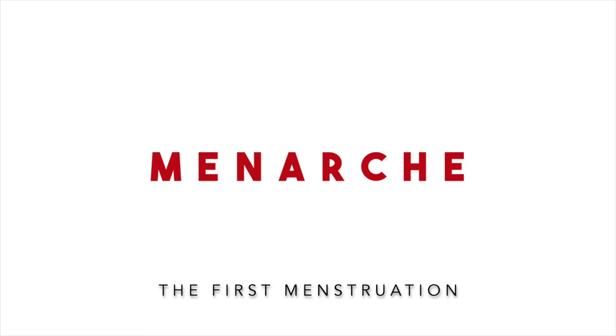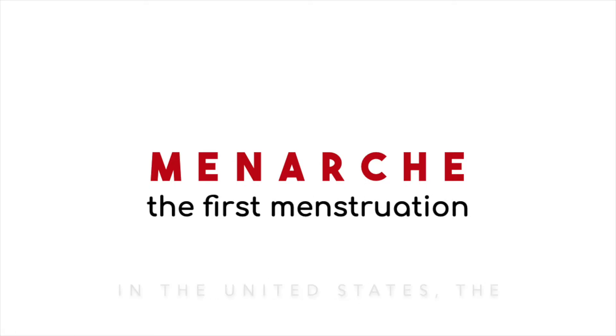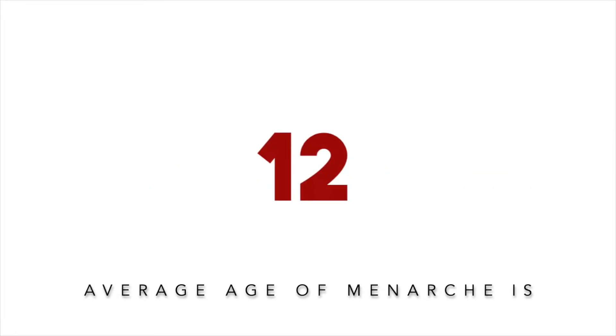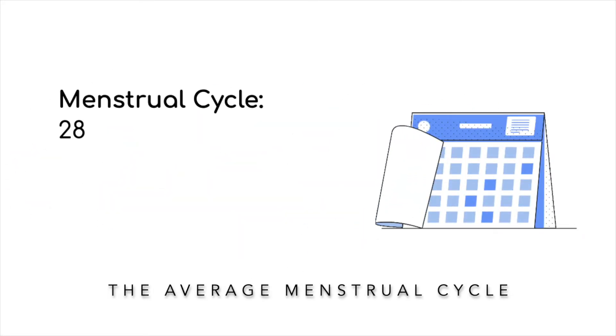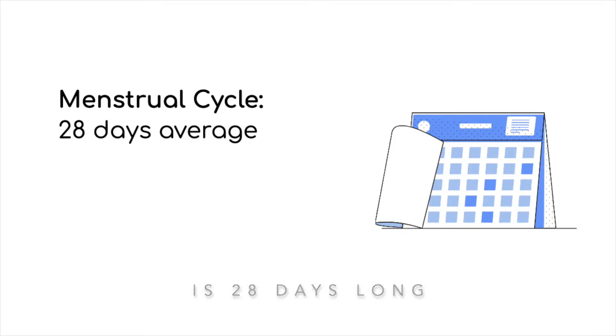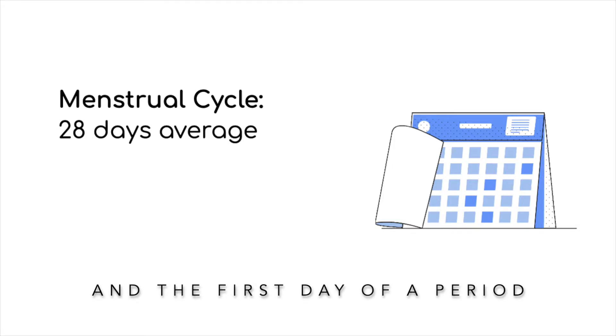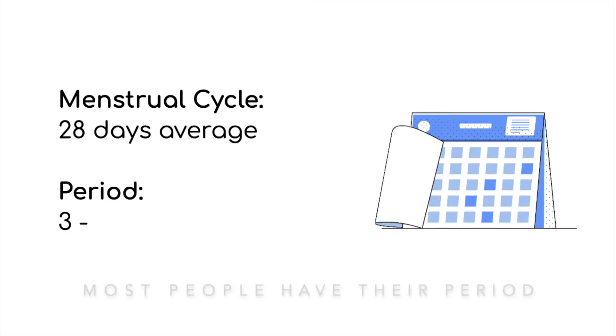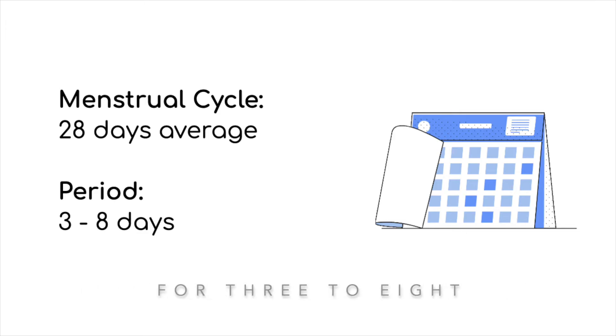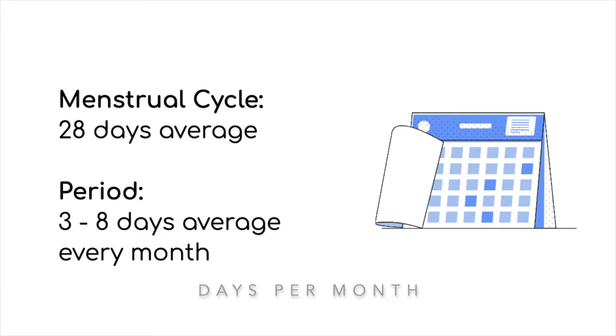Menstruation typically begins in early adolescence. The first menstruation is known as menarche. In the United States, the average age of menarche is 12 years old. The average menstrual cycle is 28 days long, and the first day of a period marks the beginning of the cycle. Most people have their period for three to eight days per month.